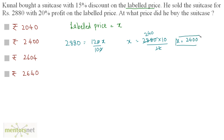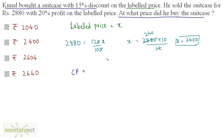We have the labeled price. Now, we want the price at which Kunal bought the suitcase. He bought it with a 15% discount on the labeled price. So the cost price equals 100 minus 15% of x, which is 85% of x. So, 85 upon 100 times 2400, which equals 2040. This is the price at which Kunal bought the suitcase.